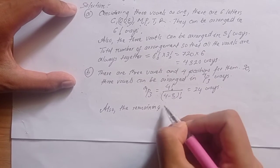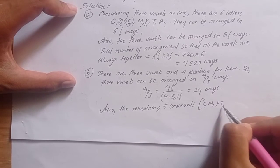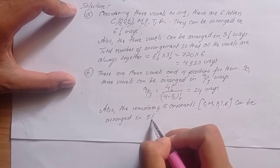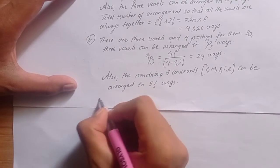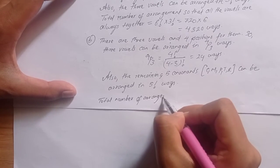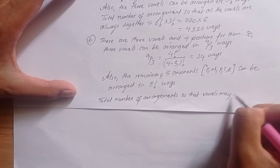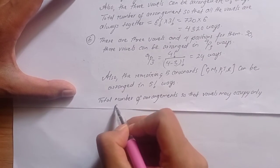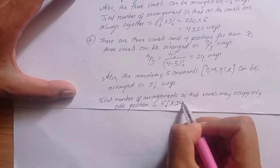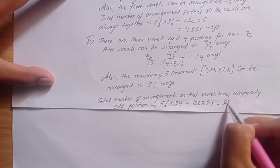The remaining five consonants — C, M, P, T, R — can be arranged in 5 factorial ways. So the total number of arrangements such that vowels may occupy only odd positions is equal to 5 factorial times 24, which equals 120 times 24, giving 2880.